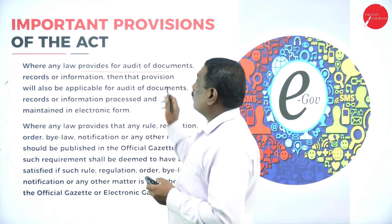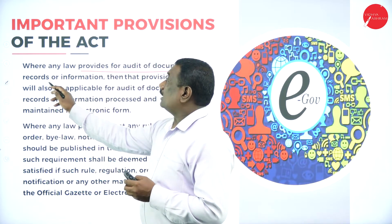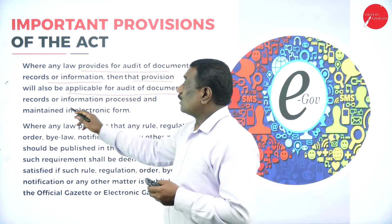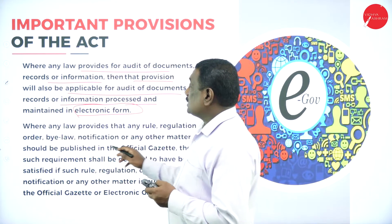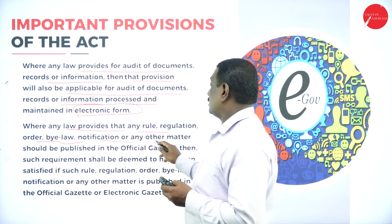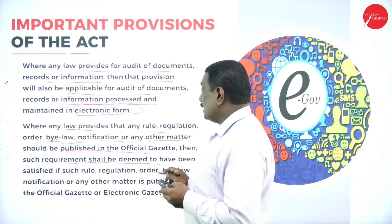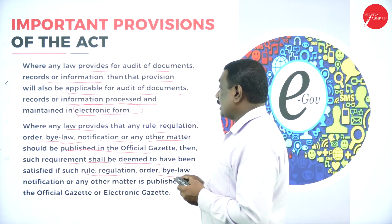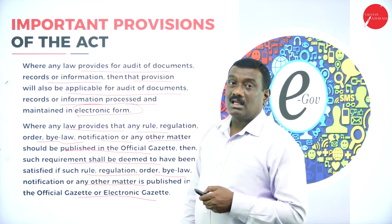Where any law provides for audit of documents, records, or any other information, those provisions will apply to documents processed and maintained in electronic form. Similarly, where any law provides that a rule, regulation, order, bylaw, notification, or any other matter should be published in the official gazette, such requirement may also be satisfied by publication in the electronic gazette.